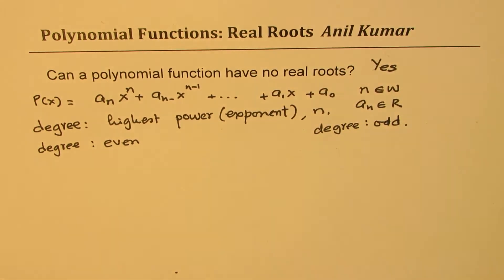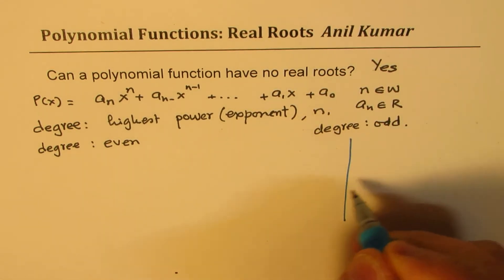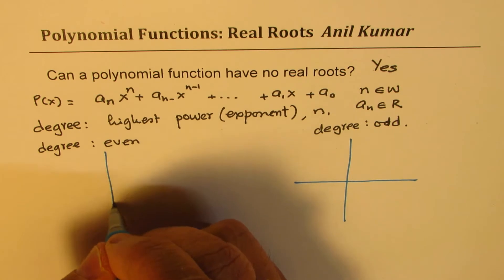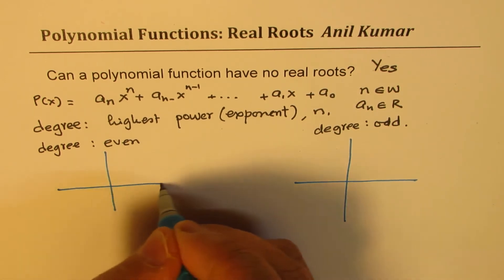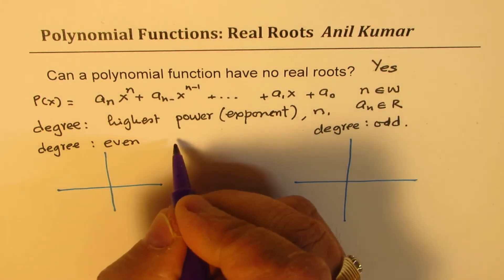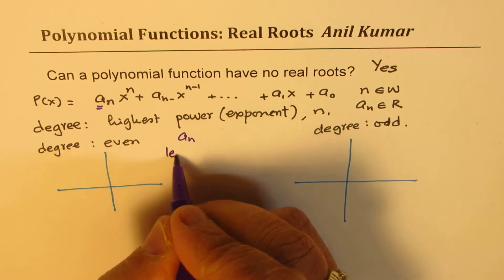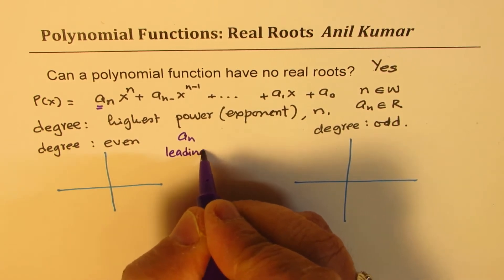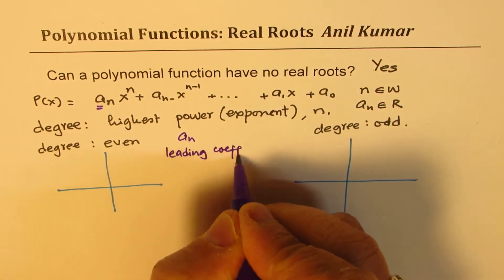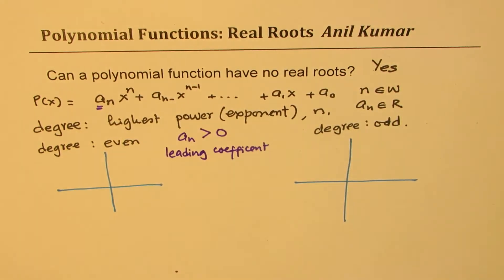So basically a polynomial could be even degree polynomial or an odd degree polynomial. Now these two polynomials behave differently as far as their end behavior is concerned. In our discussion, we'll assume that an, the leading coefficient, is greater than zero. That means it is positive.